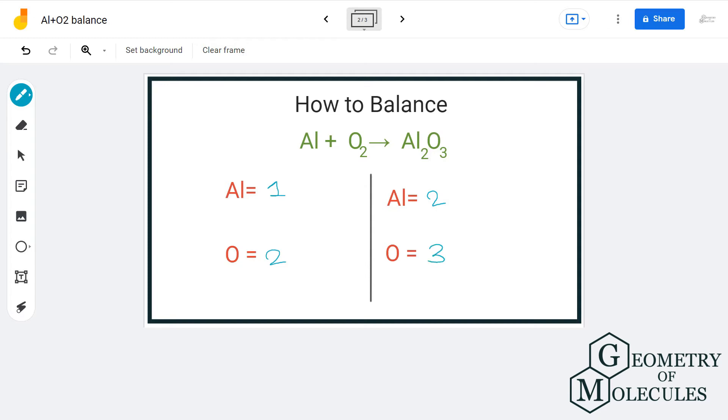If we multiply the aluminum with 2 on the reactant side, it gets balanced on both sides of the equation, but then oxygen won't get balanced.